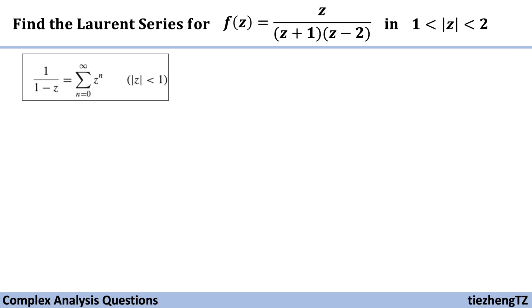In this case z modulus is larger than 1 so we're going to use 1 over z which is less than 1. And z modulus less than 2 so we're going to use half z which is less than 1.